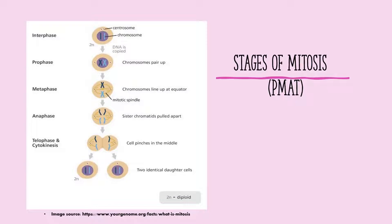The stages of mitosis is PMAT: P for prophase, M for metaphase, A for anaphase, and T for telophase. Interphase is the event prior to mitosis.